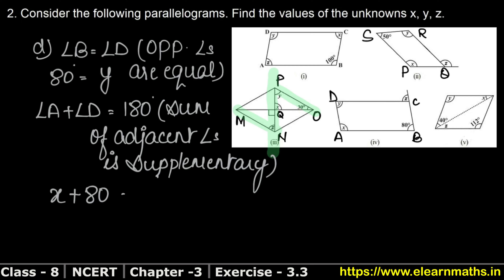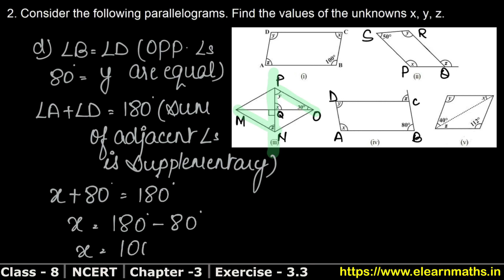How much is angle A? It equals 180 degrees minus angle D. So x equals 180 minus 80, giving x equals 100 degrees.